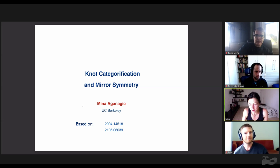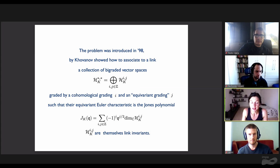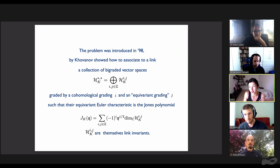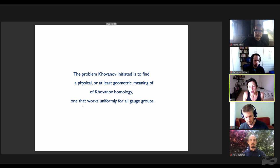In this talk, I'll describe how mirror symmetry solves the problem of categorifying quantum link invariants. The problem was introduced in 1998 by Khovanov, who showed how to associate to a link a collection of bi-graded vector spaces, graded by homological grading and an equivariant grading, such that the equivariant Euler character is the Jones polynomial, and the vector spaces themselves are link invariants. The problem Khovanov initiated is to find a physical or geometric meaning of Khovanov homology, one that works uniformly for all gauge groups.